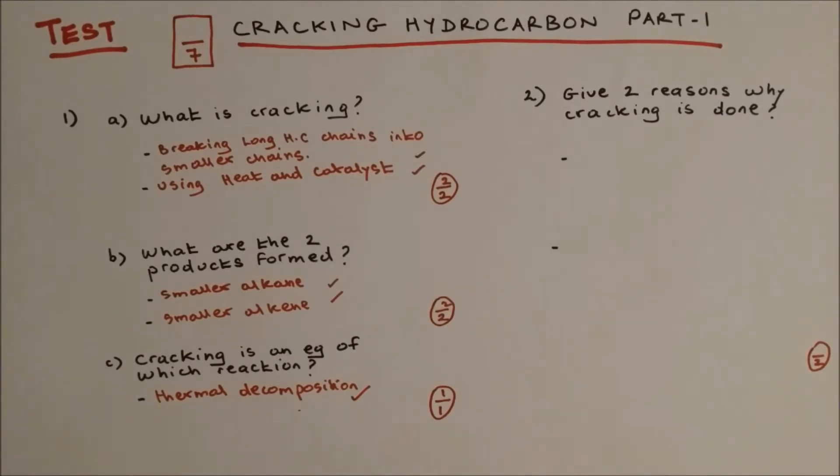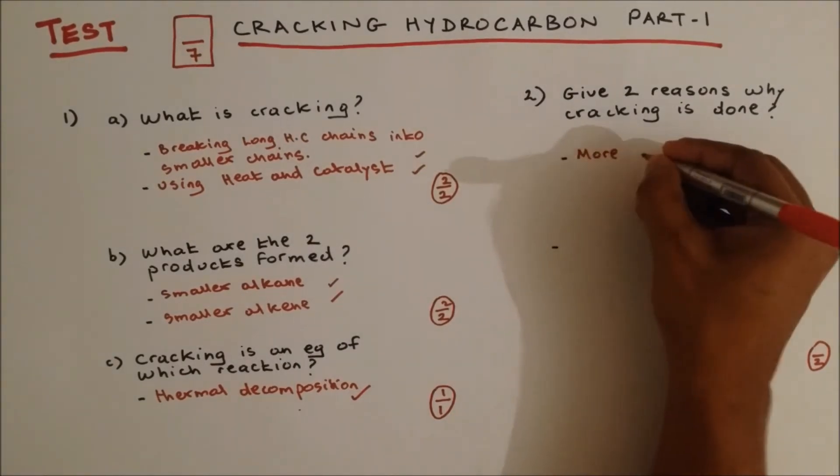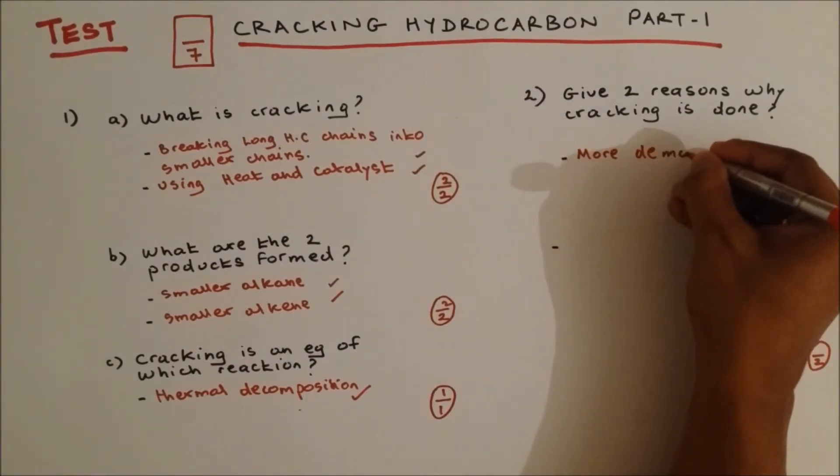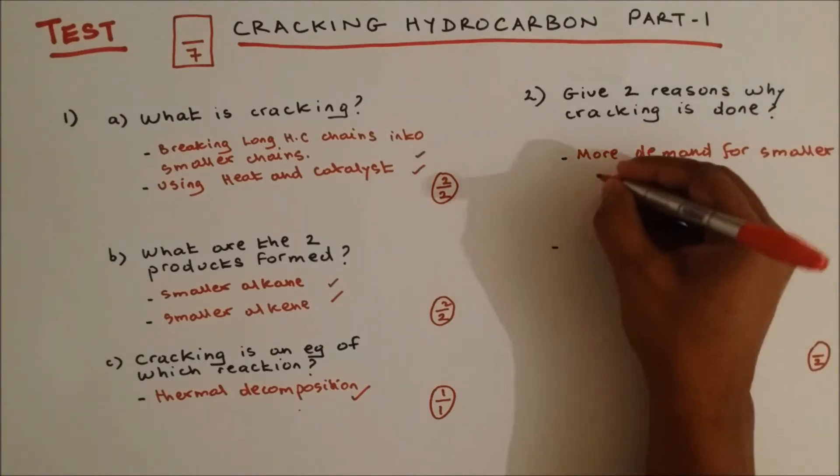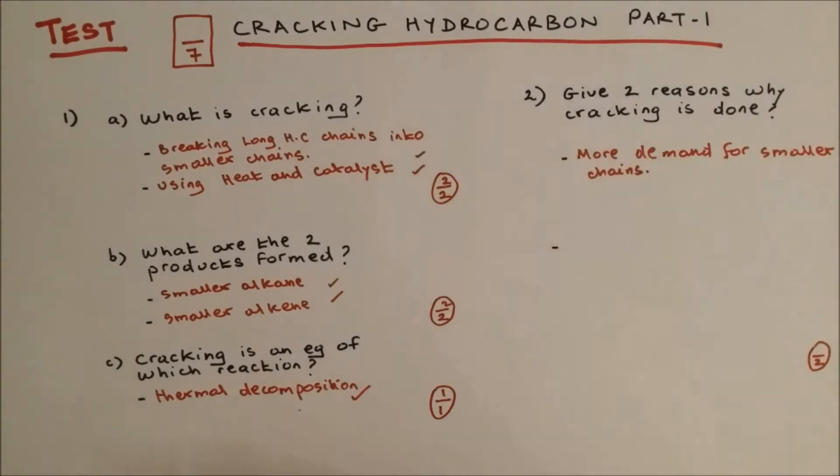Question 2: Give two reasons why cracking is done. The reason is to break the long hydrocarbon chain into smaller chains, but why? The first reason is because smaller chains have higher demand - more demand for smaller chains. Petrol, which is a smaller chain, will have higher demand than bitumen, which has a larger chain. So bitumen will be broken down into smaller chains.